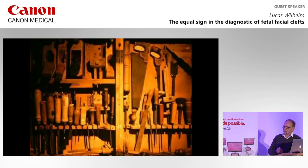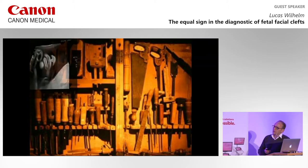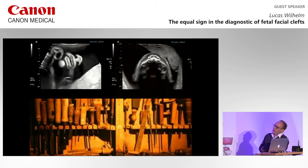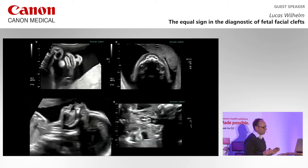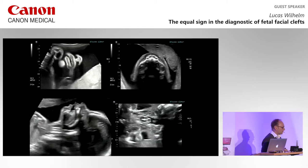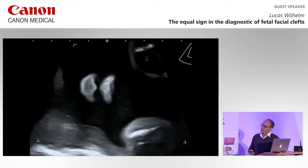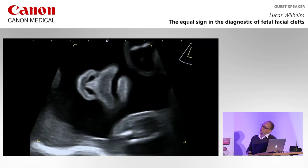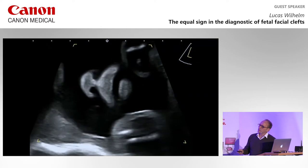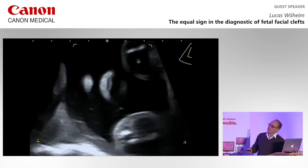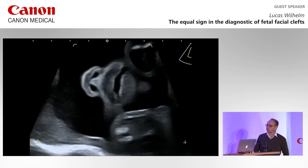What are the tools we need for correct diagnosis of fetal facial clefts? You see these four planes, and with these four planes you are able to make a correct diagnosis of all fetal facial clefts. The first one is the coronal frontal section with a depiction of the nostrils, the tip of the nose, the upper lip, and both lips. In this view, it's not so difficult to find defects of the upper lip.